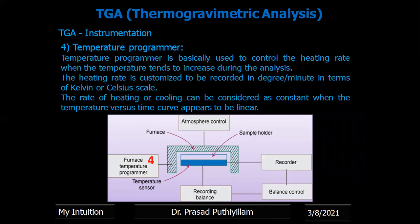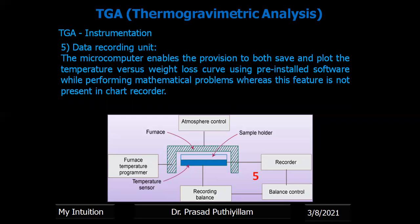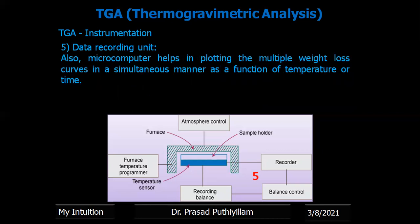The fourth component is the temperature programmer, which controls the heating rate even as temperature increases during analysis. The heating rate is customized and recorded in degrees per minute in Kelvin or Celsius. The rate of heating or cooling is considered constant when the temperature versus time curve appears linear. The fifth component is the recording system or data recording unit, which may be a chart recorder or microcomputer. Nowadays, a microcomputer is preferred because it enables saving and plotting the temperature versus weight loss curve using pre-installed software, and can plot multiple weight loss curves simultaneously.